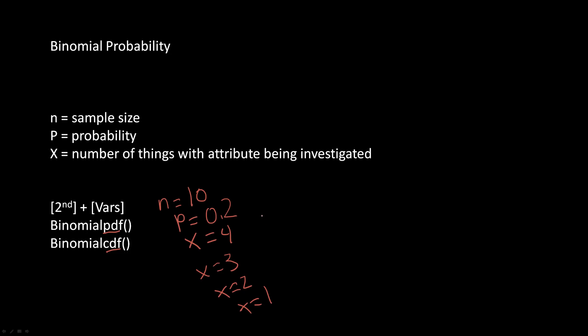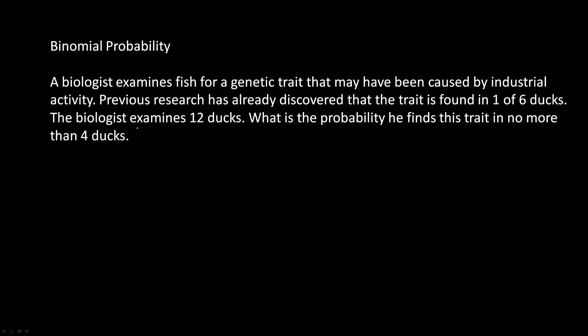So let's do an example. A biologist examines fish for a genetic trait that may have been caused by industrial activity. Previous research has already discovered that the trait is found in 1 of 6 ducks. The biologist examines 12 ducks. What is the probability he finds this trait in no more than 4 ducks? A key word here would be no more than 4 ducks, which means that it's including 4, less than 4 too. So we need to use binomial CDF because it's a cumulative of everything from 4 and less.